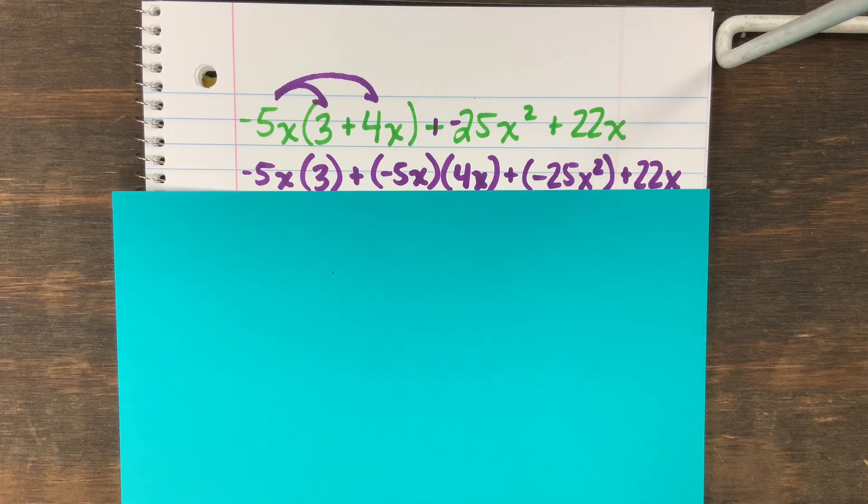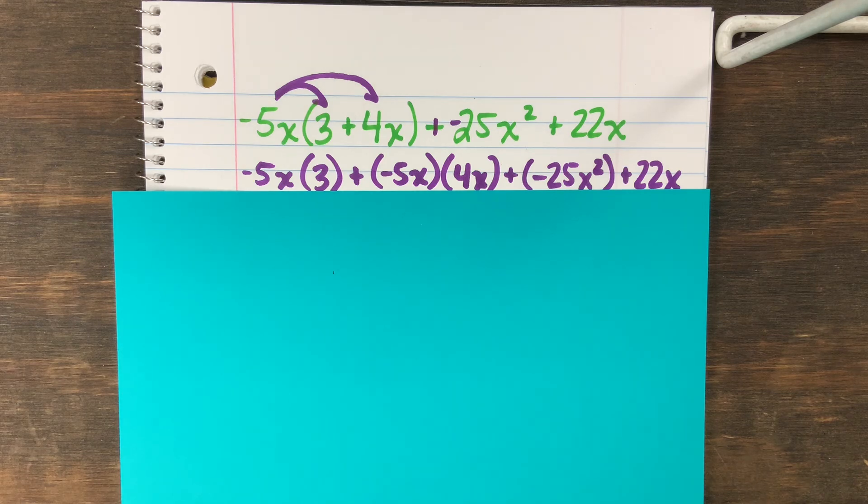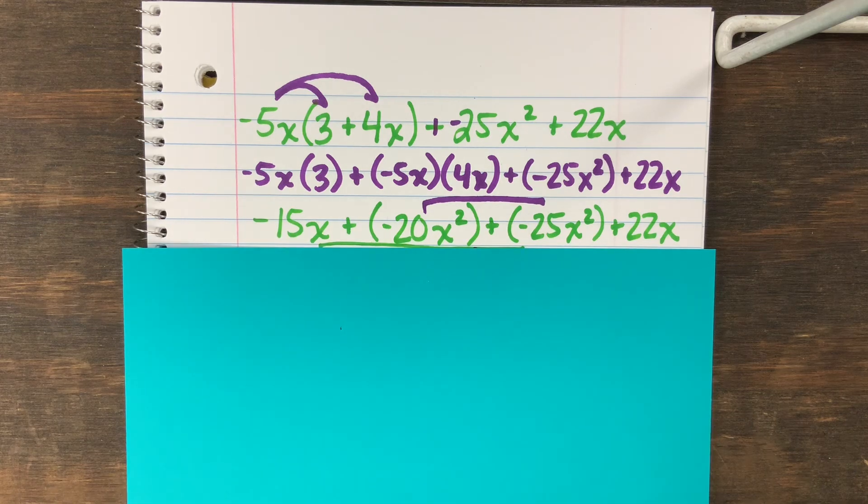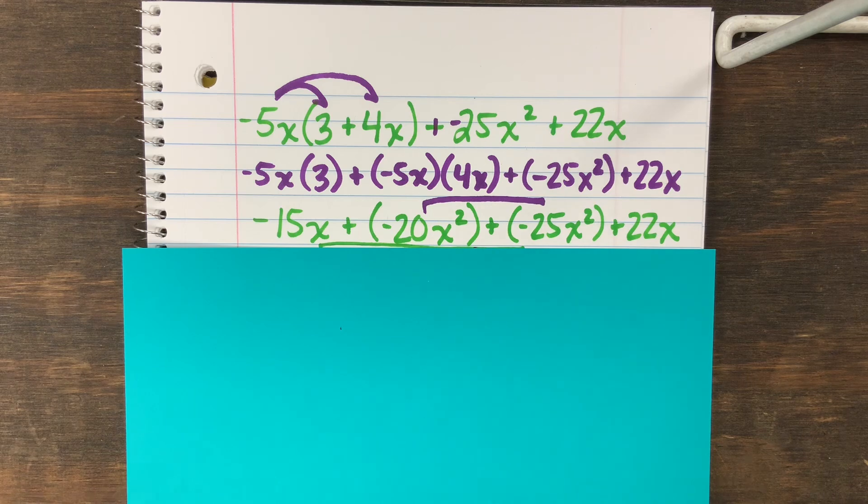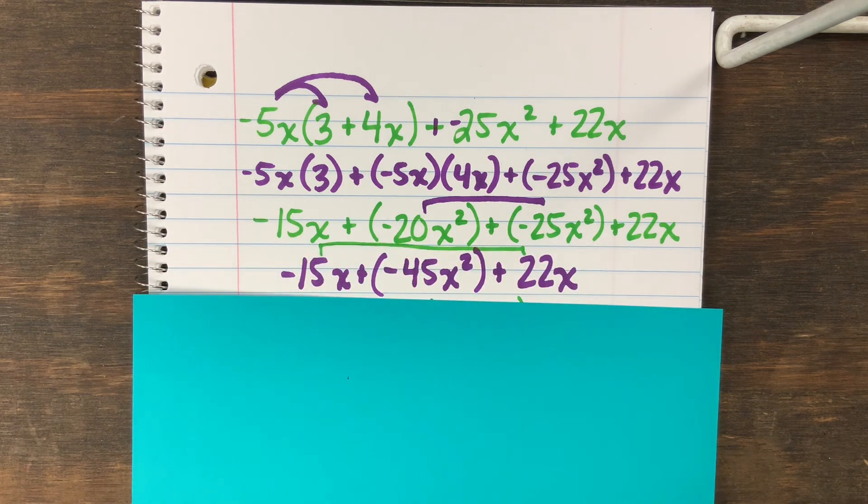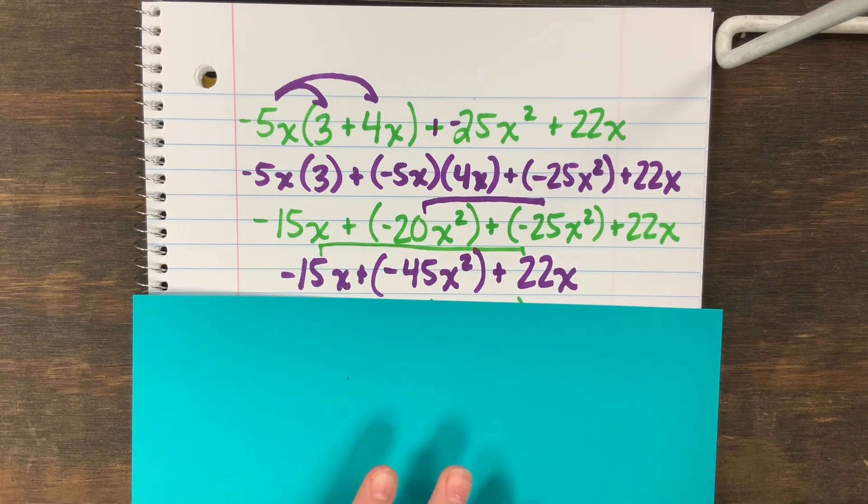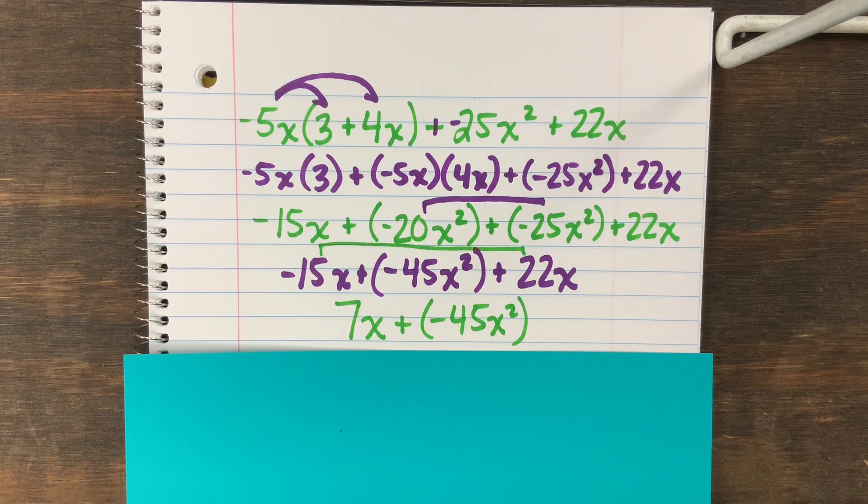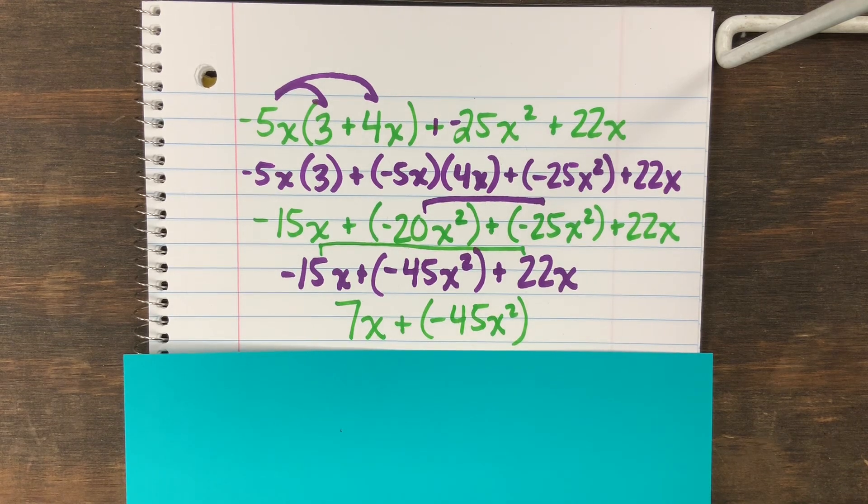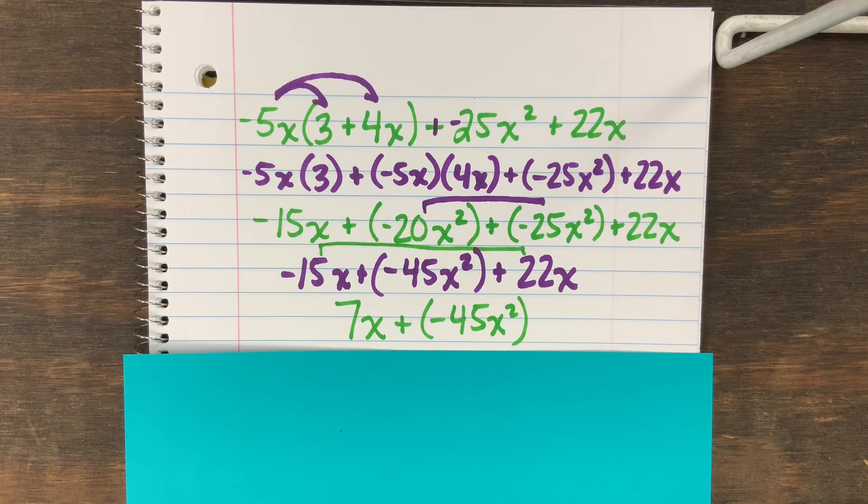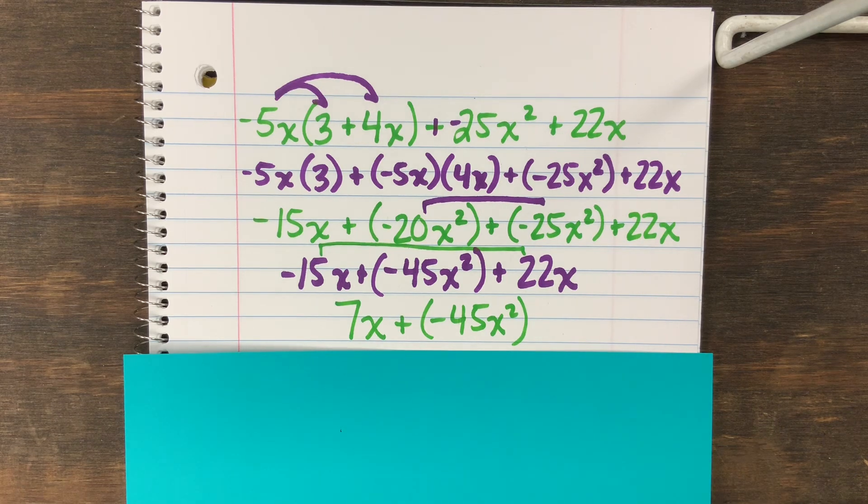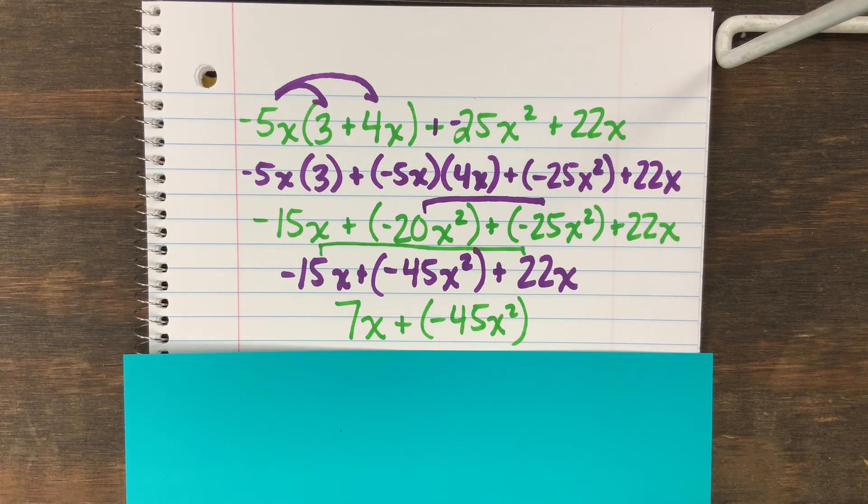Times 4x, and then we drop everything down. We get negative 20x² plus negative 25x² plus 22x negative 15x plus negative 25x². And we do negative 15x plus 22x and we get 7x plus negative 45x² for our final answer.